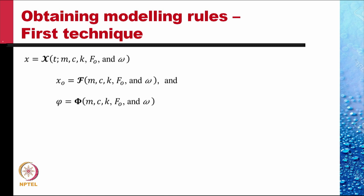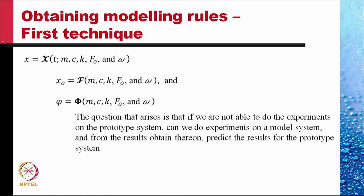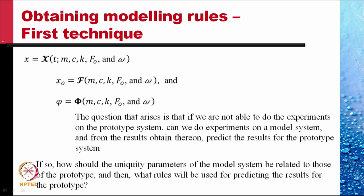Note that in both these cases, the independent variable t would not be involved. The question that arises is: if we cannot do experiments on the prototype system, can we do experiments on a model system and predict the results for the prototype? If so, how should the unity parameters of the model system be related to those of the prototype? And what rules will be used for predicting prototype results from model results?